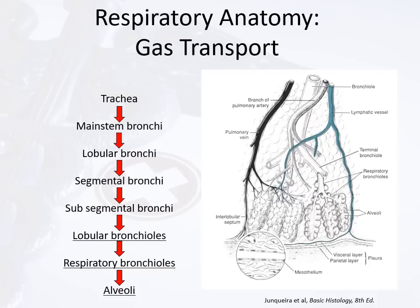Regarding respiratory anatomy and transport: the lungs have passageways including the trachea, main stem bronchi, lobular bronchi, segmental bronchi, subsegmental bronchi, lobular bronchioles, respiratory bronchioles, and eventually alveoli. In this figure you can also see a branch of the pulmonary artery and a branch of the pulmonary vein. What the lungs do is allow air and the oxygen within it to meet up with blood so that the blood can get oxygenated — the focus here is on oxygen, though CO2 transport can be affected as well.